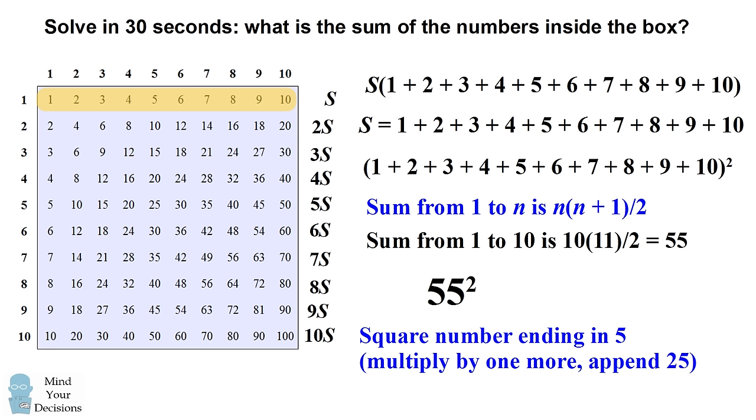So I would look at 55 squared, and I would say, there's a 5 in the tens digit, so I'd multiply 5 times 6, because 6 is 1 more than 5. So 5 times 6 is 30, and then I would put 25 at the end. So I'd get 3025 is 55 squared. And that's our answer.